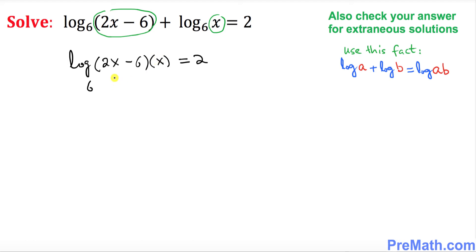Now I want you to go ahead and distribute this thing, multiply them out. So this could be written as log of 2x squared minus 6x with base 6 equals to 2.